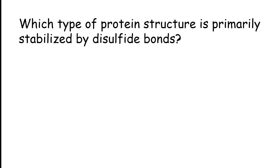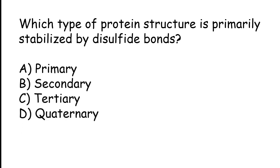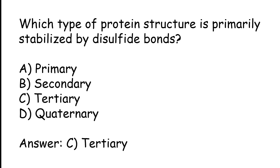Which type of protein structure is primarily stabilized by disulfide bonds? Options: primary, secondary, tertiary, quaternary. The correct answer is option C: tertiary.